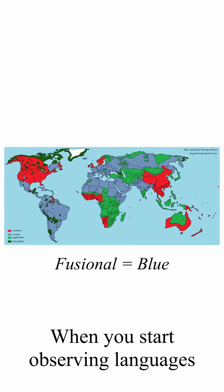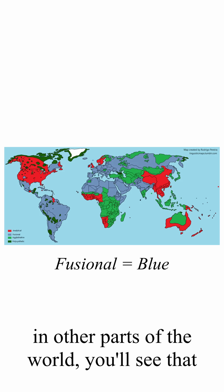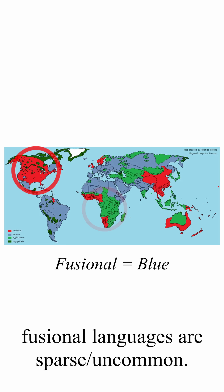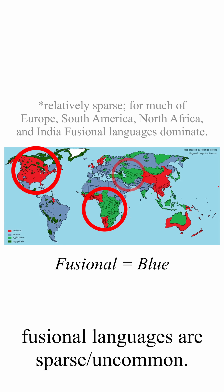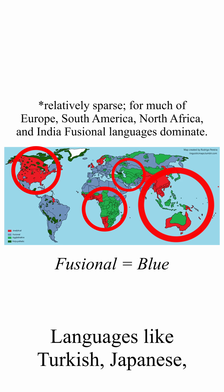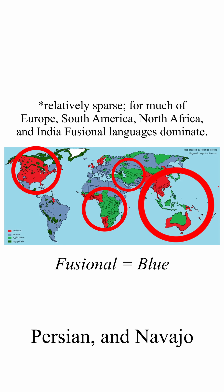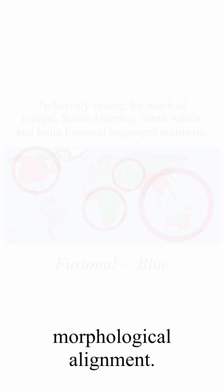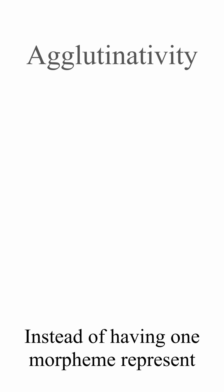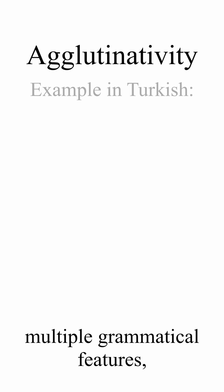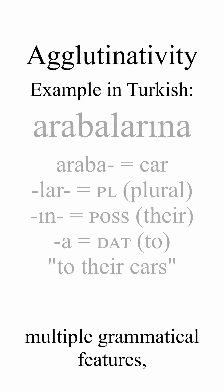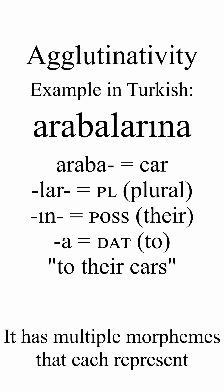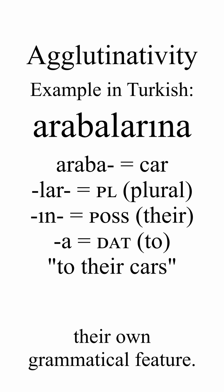When you start observing languages in other parts of the world, you'll see that fusional languages are sparse and uncommon. Languages like Turkish, Japanese, Persian, and Navajo show signs of an agglutinative morphological alignment. Instead of having one morpheme represent multiple grammatical features, it has multiple morphemes that each represent their own grammatical feature.